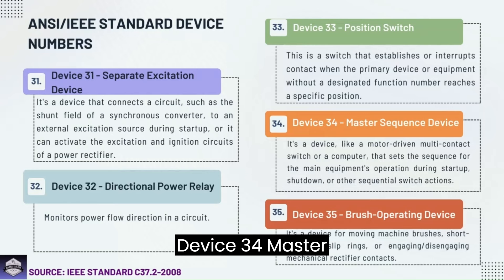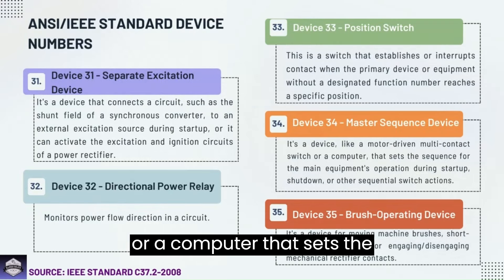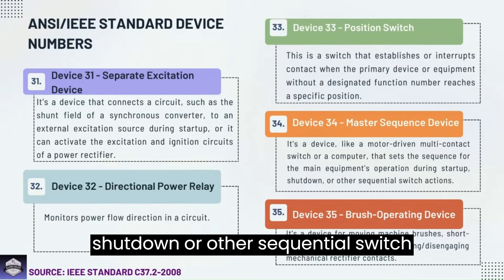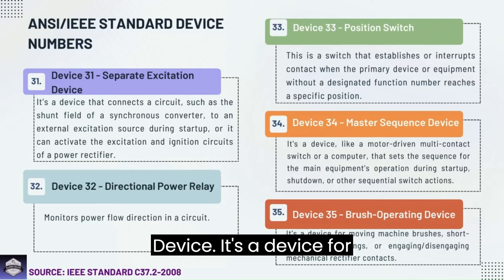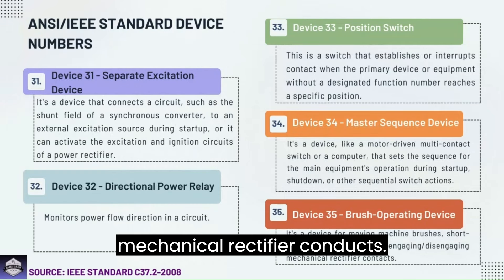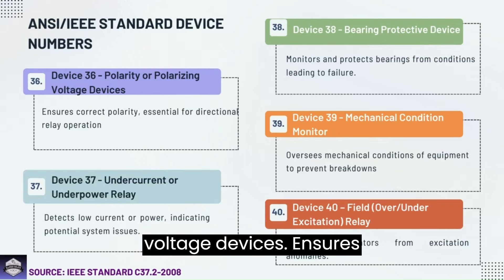Device 34: Master sequence device — a device like a motor, drum switch, multi-contact switch, or a computer that sets the sequence for the main equipment's operation during startup, shutdown, or other sequential switching actions. Device 35: Brush operating device — a device for moving machine brushes, short-circuiting slip rings, or engaging and disengaging mechanical rectifier contacts. Device 36: Polarity or polarizing voltage device — ensures correct polarity, essential for directional relay operation.